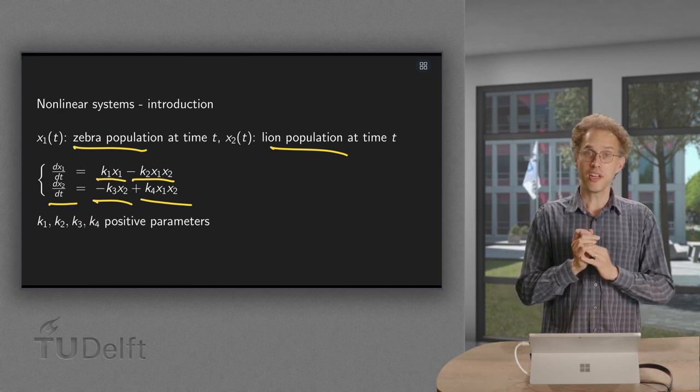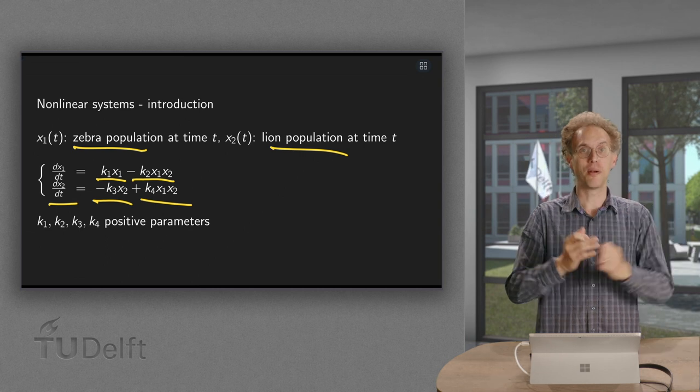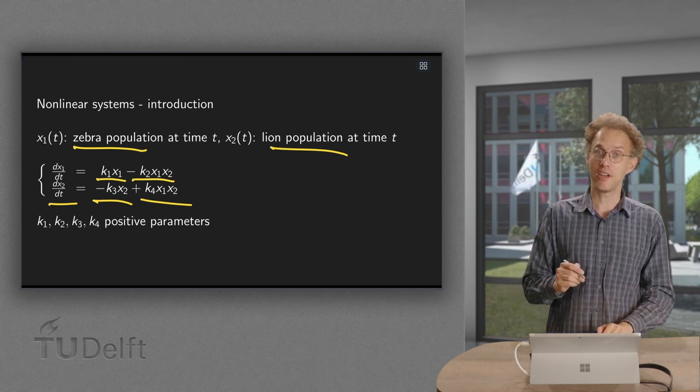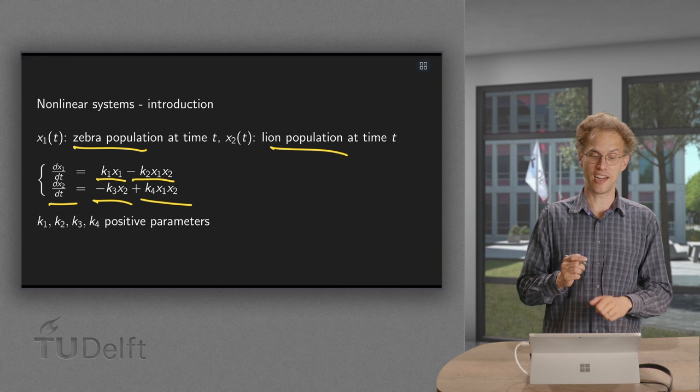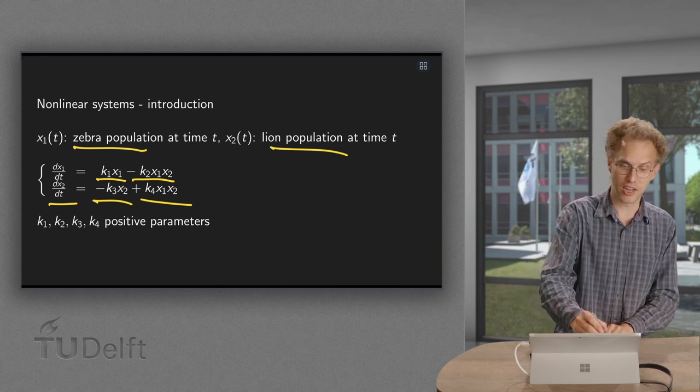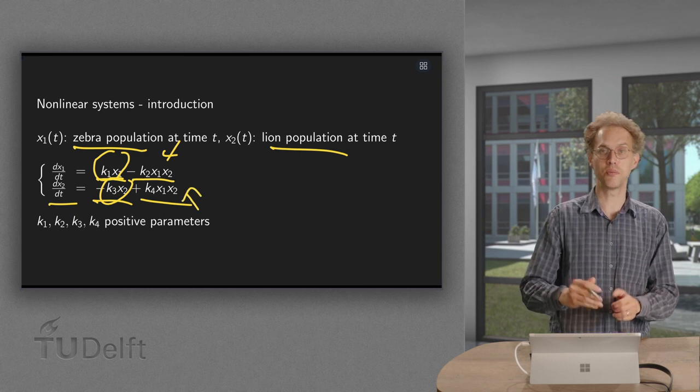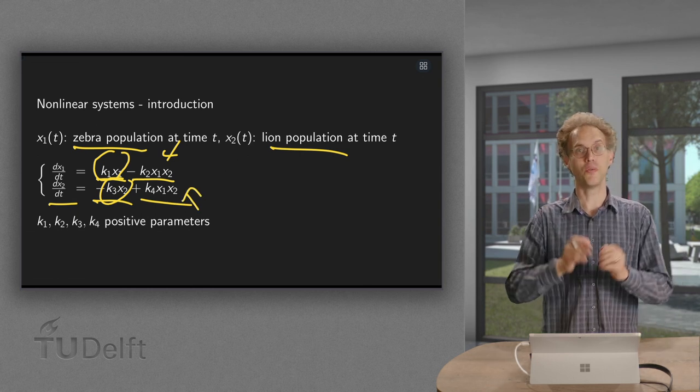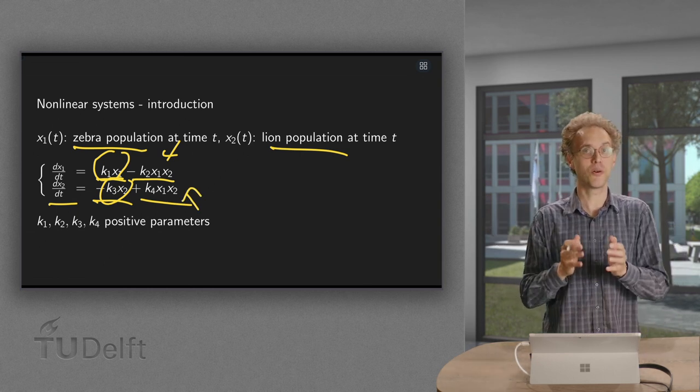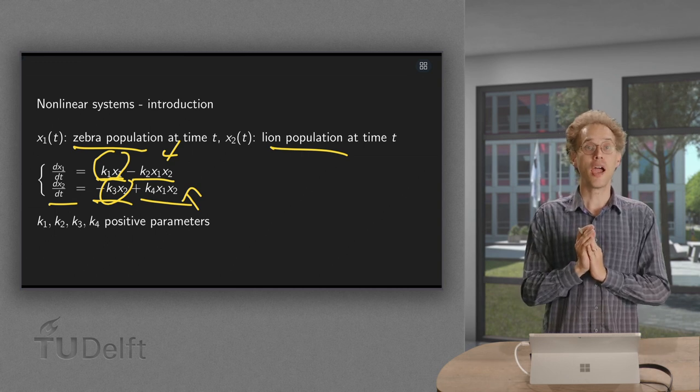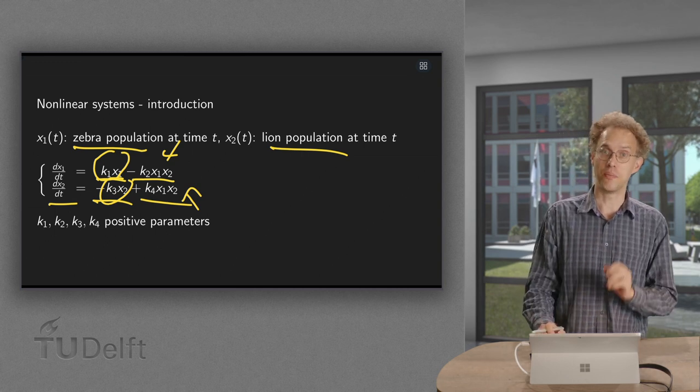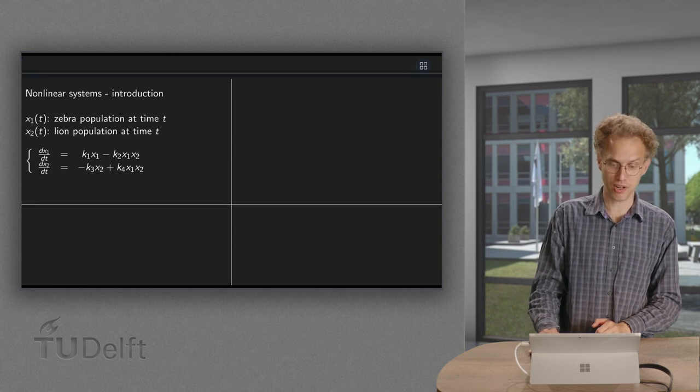So that's how we can model lion-zebra population. And here already we see an example of nonlinearities arising because here we are linear, here we are linear, but here we have some nonlinear terms. So what will happen in the end? Will they both grow? Will they go extinct? I don't know. We'll have to analyze that. That's for later. Let's move on to our second example.